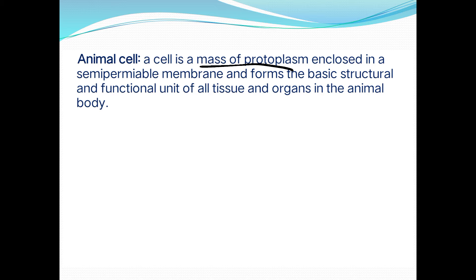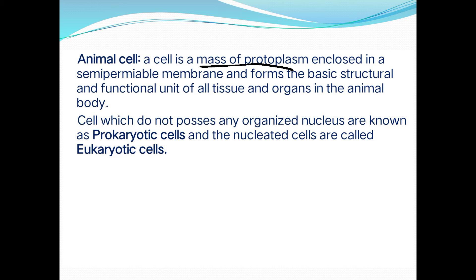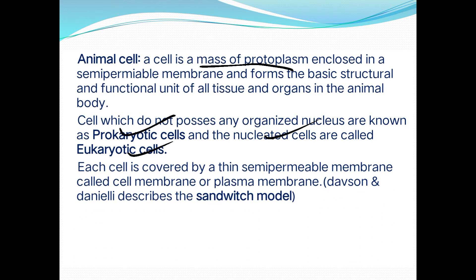Cells that do not possess any organized nucleus are known as prokaryotic cells. Nucleated cells are eukaryotic. Each cell is covered by a thin semi-permeable membrane called the cell membrane or plasma membrane, described by Davson and Danielli as the sandwich model.